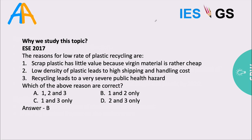In 2017, there was a question on reasons for the low rate of plastic recycling. One reason is that scrapped plastic has little value because virgin material is rather cheap — it is cheaper to produce new material than to collect and recycle. Higher volume means more transport and handling costs. Recycling helps the environment so chemicals and additives in plastic don't go into the environment. However, the recycling industry can be hazardous due to the substances involved, but with proper precautions that can be eliminated. The answer is B.